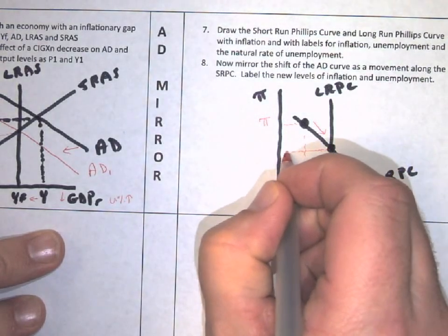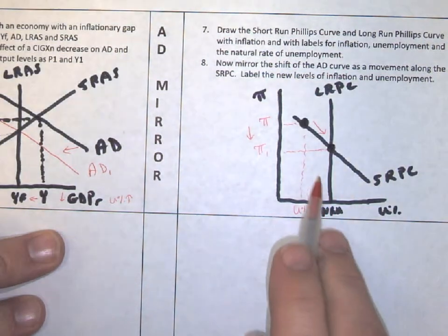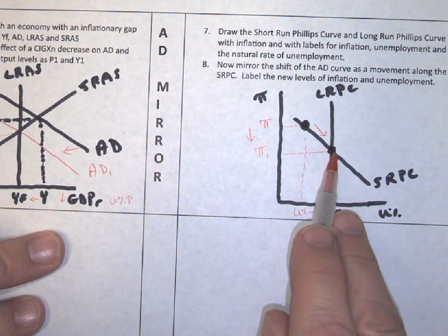Now, did our goal work? Yes. We reduced inflation. So we show that by our movement along the short run Phillips curve. We start here with inflation, and then we fix it.